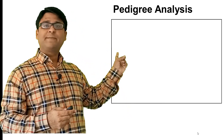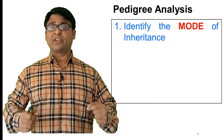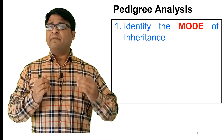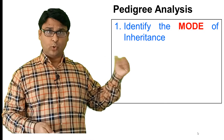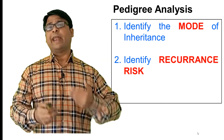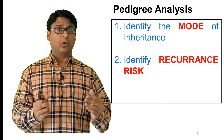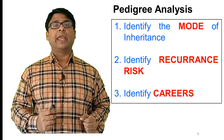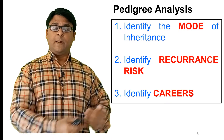What do we expect in pedigree analysis? The first thing is to identify the mode of inheritance. In today's lecture, I will tell you how to identify autosomal dominant disorders just by looking at the pedigree. The second thing is the recurrence risk — I will tell you how to calculate it using the Punnett square. And the third thing in pedigree analysis is always to identify if somebody is a carrier.